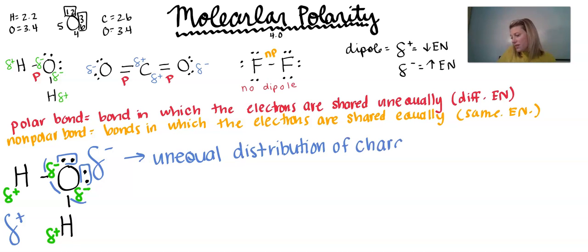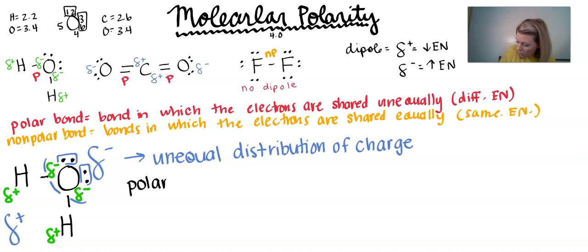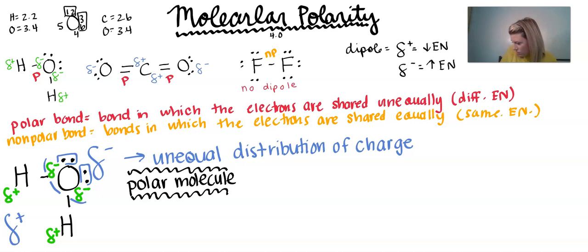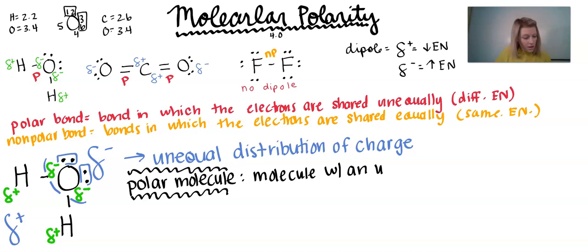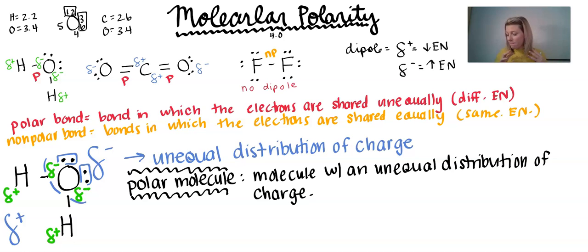When we have this unequal distribution of charge across the molecule, we call this a polar molecule. A polar molecule is a molecule with an unequal distribution of charge. Water has not only polar bonds, but it is also considered a polar molecule — all of the negative charge lies to one half of the molecule, and all of the positive lies to the other half.